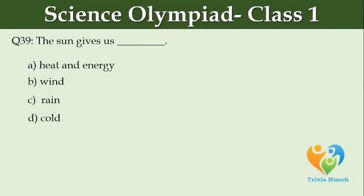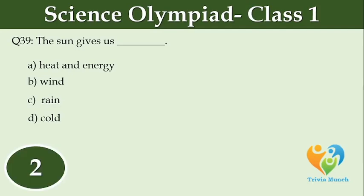The Sun gives us dash. Option A: Heat and Energy. Option B: Wind. Option C: Rain. Option D: Cold.